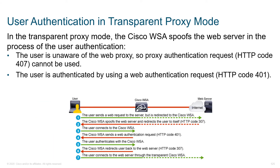In transparent proxy mode, the WSA spoofs the web server and the user doesn't know there's a web proxy there. So the 407 proxy authentication request can't be used, because the user wasn't configured to use a proxy. This is where the user can be authenticated using CWA — Centralized Web Authentication — which steers the user into a central portal and forces them to authenticate there. We still get all our logging data and know who they are and what they're supposed to be doing.